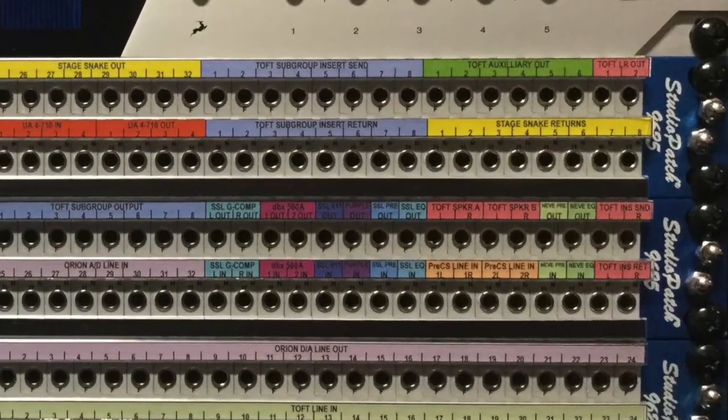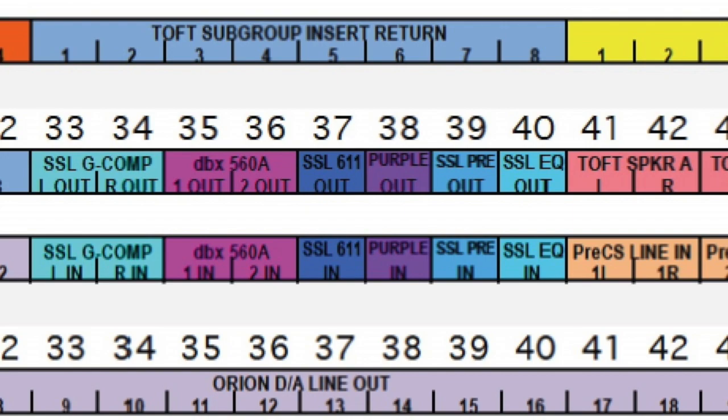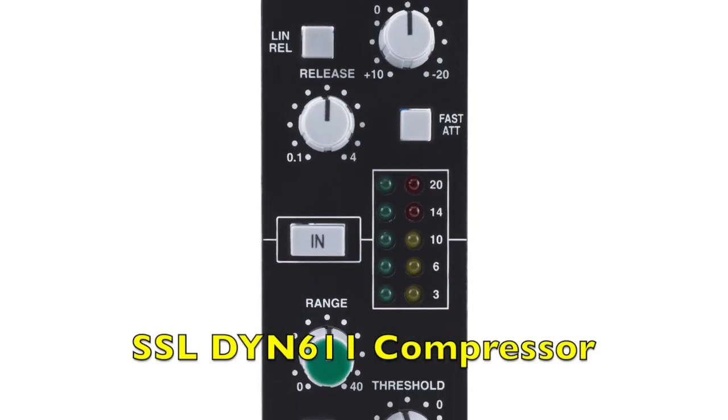A great example of that would be the inputs and outputs of the same device being above and below each other. If they were internally connected with a half normal, it would create a feedback loop where the output would constantly be feeding back into the input of the same piece of equipment, causing a lot of issues and potentially over-driving the input of that device and causing damage.